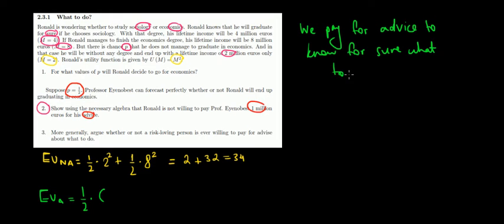And in this case, if we know that we're gonna fail in economics, what's a better option? Just being jobless, I mean without a degree, or going for sociology where we have a certain outcome of 4? Well, obviously 4 is better than 2.